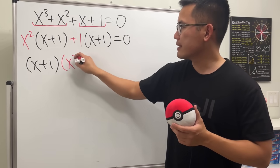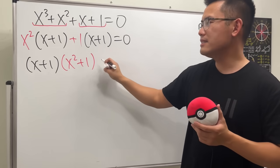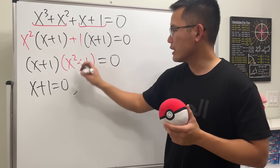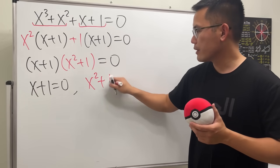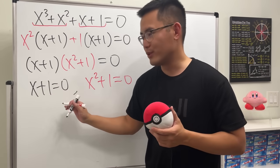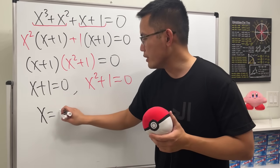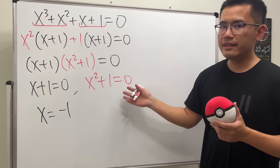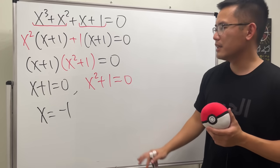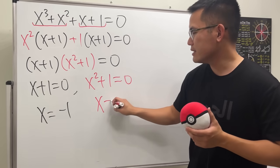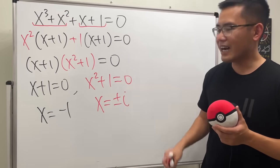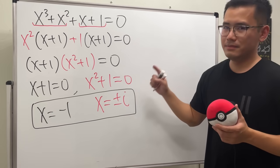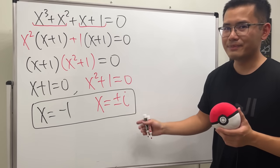Since x plus one is common, we factor it out, giving us x plus one times x squared plus one equals zero. Setting each factor to zero: from x plus one equals zero, we get x equals negative one; from x squared plus one equals zero, we get x equals plus or minus i. So we have three solutions: negative one, i, and negative i.